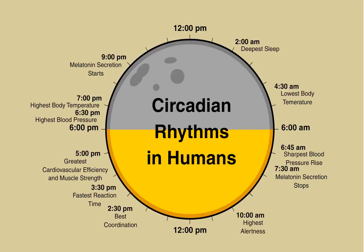Night is maintained by melatonin. At 10 o'clock, highest alertness; at 2:30, best coordination; at 3:30, fastest reaction time; at 5 o'clock, greatest cardiovascular efficiency and muscular strength; at 6 p.m., highest blood pressure; at 7, highest body temperature; and at 9 p.m., melatonin secretion starts. In this way, daily circadian rhythms are present in humans.